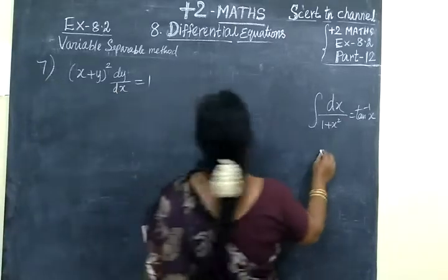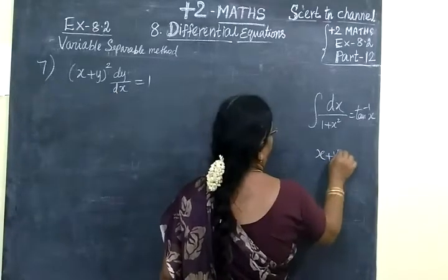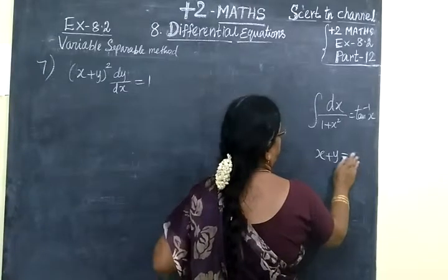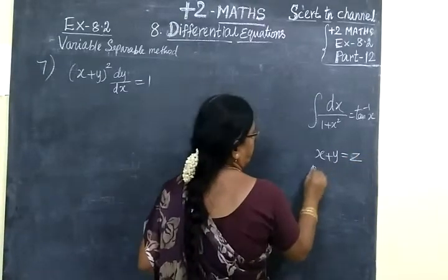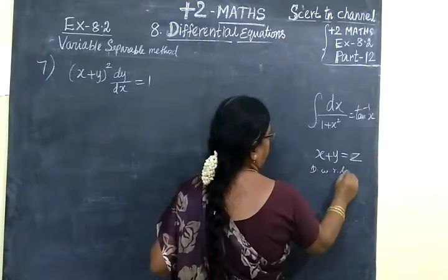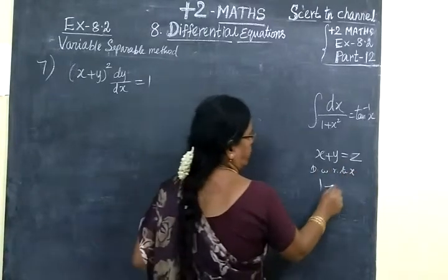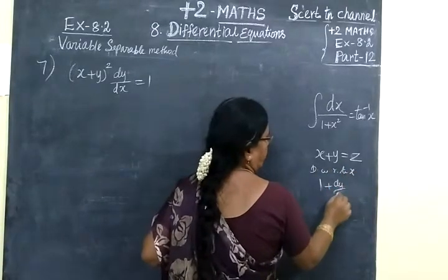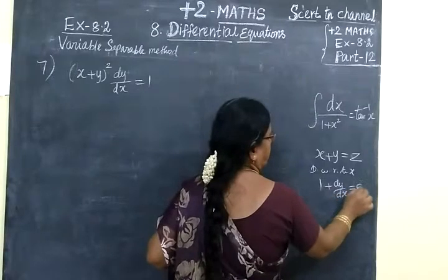Here also, we write x+y equal to z. So differentiate with respect to x. The differentiation of x is 1, and of y is dy/dx.